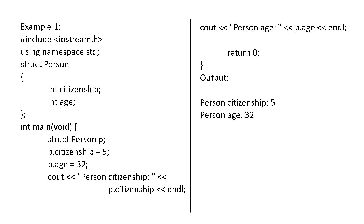Here is an example: #include iostream, using namespace std. There is a structure — struct person. The name of the structure is 'person'. The elements included within that are citizenship and age. For instance, I created P and then used P.citizenship to access the element citizenship, which is in the structure person, using the variable P. We assign citizenship the value 5 and age the value 33. You can give values to all elements like this. Then we are printing it — 'person citizenship' followed by P.citizenship, which prints 5, and 'person age' followed by P.age. Return 0. The output: person citizenship is 5 and person age is 32.